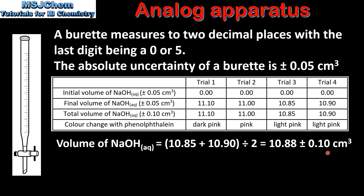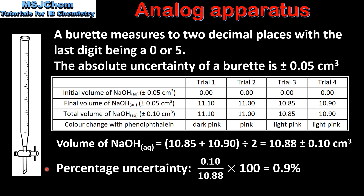The value of the uncertainty for the average volume of sodium hydroxide is the same as for the total volume of sodium hydroxide. Finally, we calculate the percentage uncertainty by dividing the absolute uncertainty by the average volume of sodium hydroxide used, multiplied by 100. This gives us a percentage uncertainty of 0.9%.